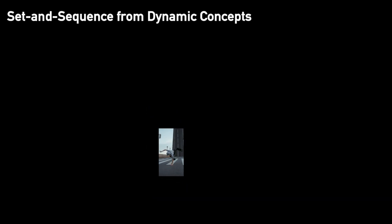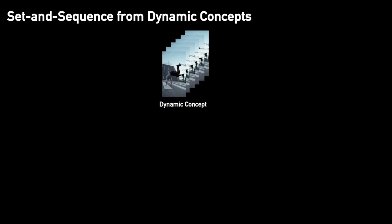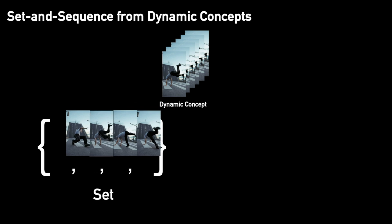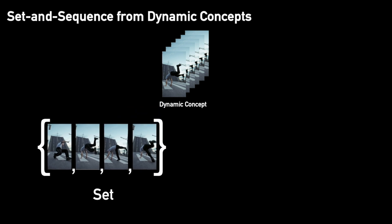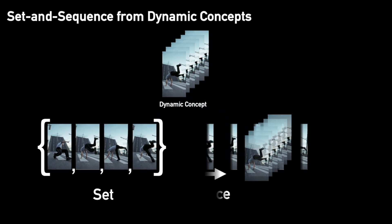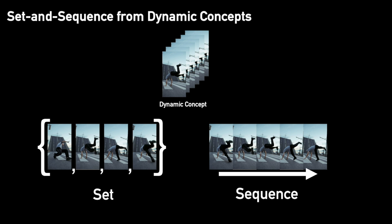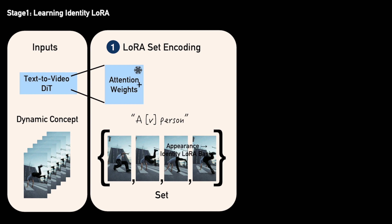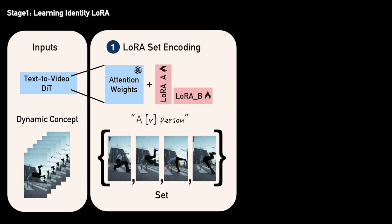The framework splits the dynamic concept into two components: a set, which represents an unordered collection of frames to capture appearance, and a sequence, which encodes temporally coherent motion from the video. In stage one, we train an identity LoRA basis using the set to capture appearance. This ensures that the static features of the dynamic concept, such as identity, are preserved.